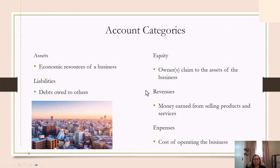You really should know what the account categories are and what they mean. An asset is an economic resource of a business — it's something you own, like a building, checking accounts, cash, vehicles, things like that.